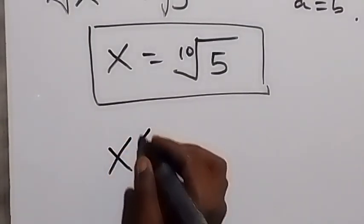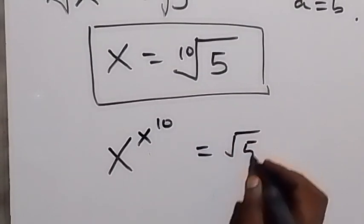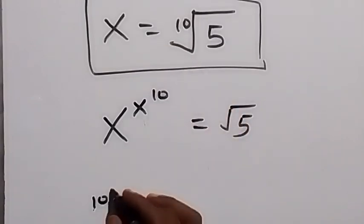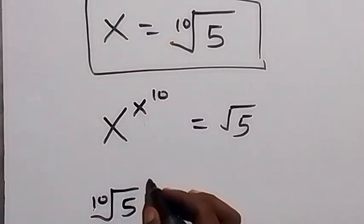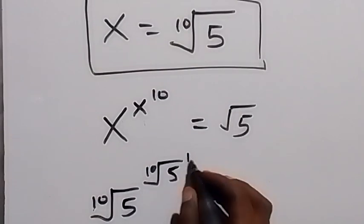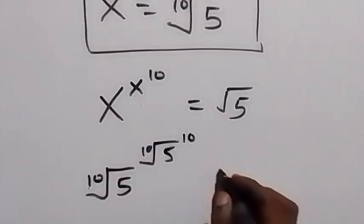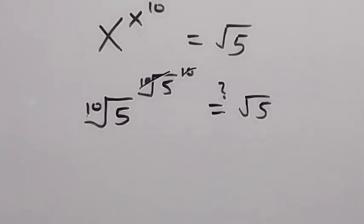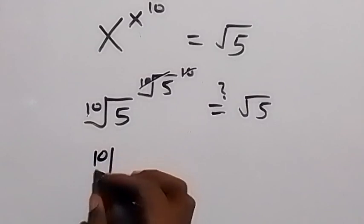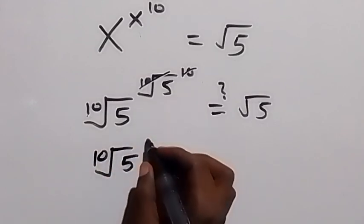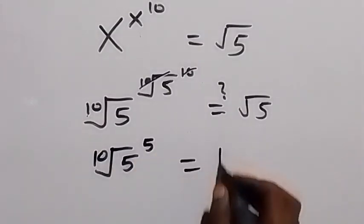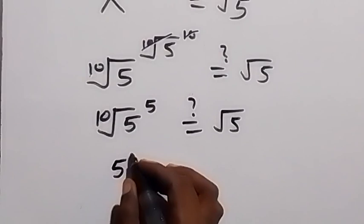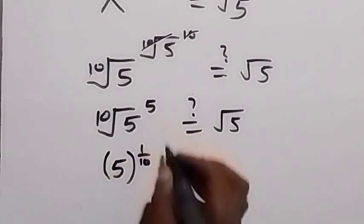Now to check: x raised to power x raised to power 10 equals root 5 — the value of x we got. When we substitute, we have the 10th root of 5, raised to the power of x, that is raised to the power of the 10th root of 5, then raised to the power 10. The raised to power 10 cancels out the 10th root, so this becomes 5, and that is the 10th root of 5 raised to the power of 5.